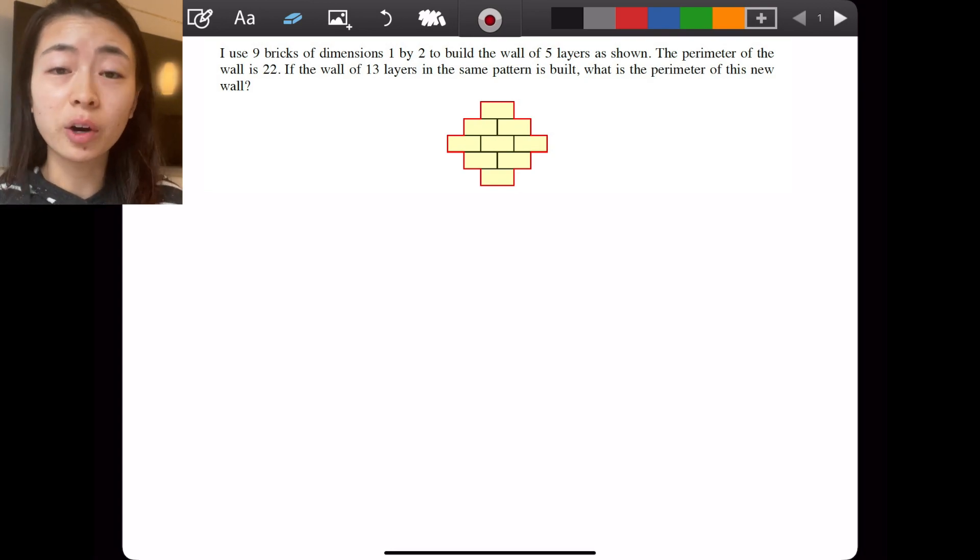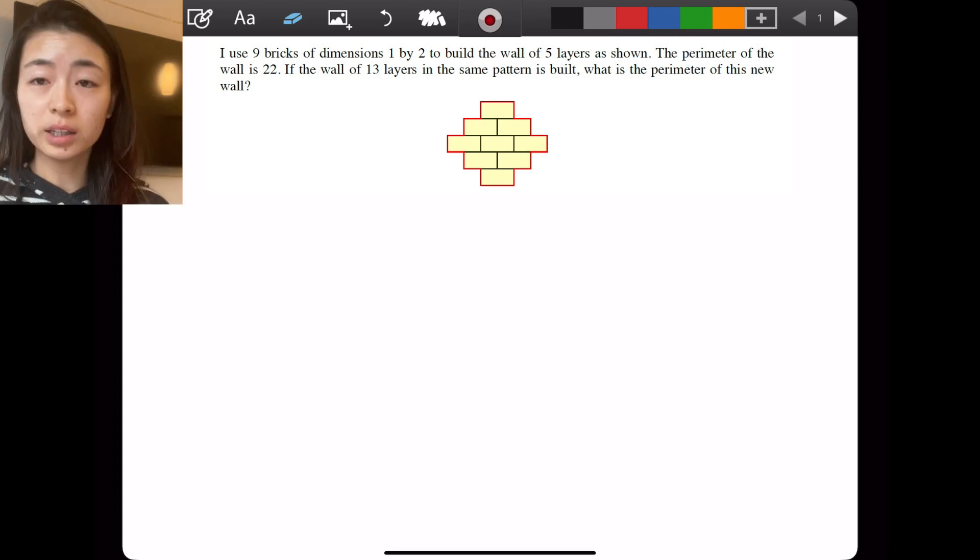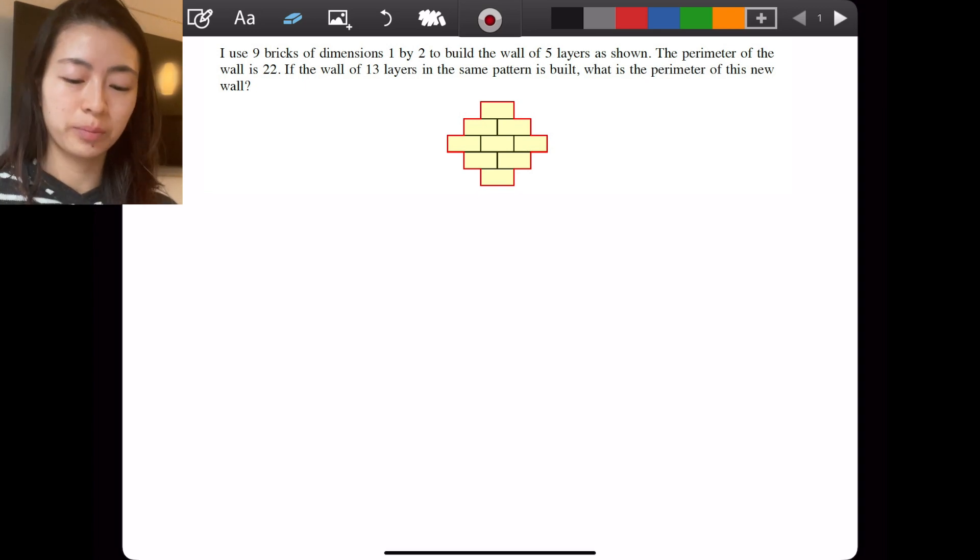How I would restate this in my own words to make sure I understand the problem is that we're using bricks of dimensions one of height and two of width to build a wall. And when we stack this wall with a pattern of one, two, three, and then going down from there, in this pattern wall we're going to have a perimeter and that's the red line you see on the edge of the figure. We're trying to see that if we build 13 layers, what would the perimeter be of this new wall?